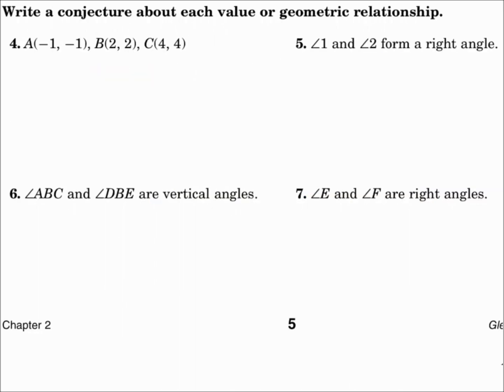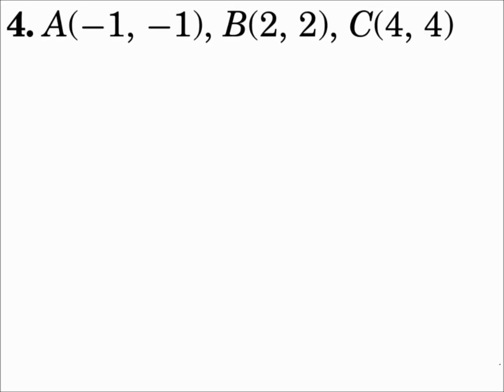Write a conjecture about each value or geometric relationship. Number 4: You're given three points. If I were to plot those points, I would actually see that they form a line if you connect them. So my conjecture will be that A, B, and C are collinear. You could also say that A, B, and C are coplanar, or that they're on the same line. You might even say that A, B, and C form the vertices of a triangle, and that would be incorrect, but it's still a conjecture. Conjectures can be false, but it would still be a good conjecture that's related to the situation.